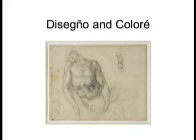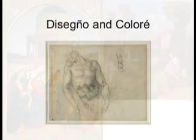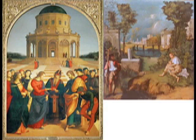Disegno and Colore. When studying high Italian Renaissance, there are two distinct schools of image creation: Disegno, design, and Colore o Colorito, color.